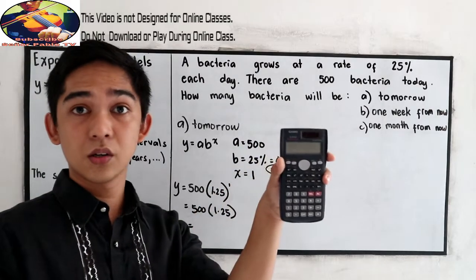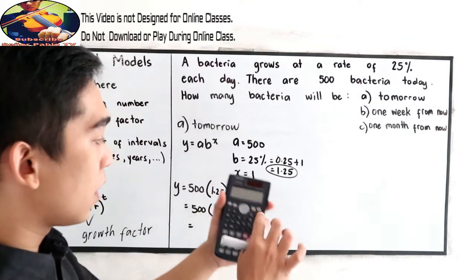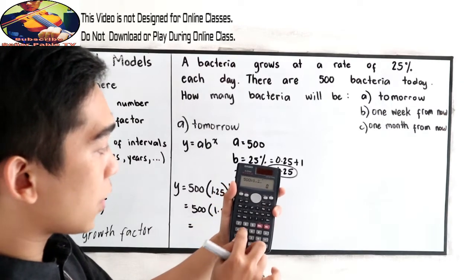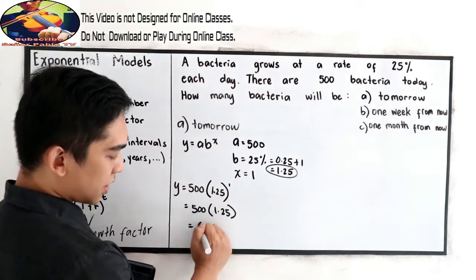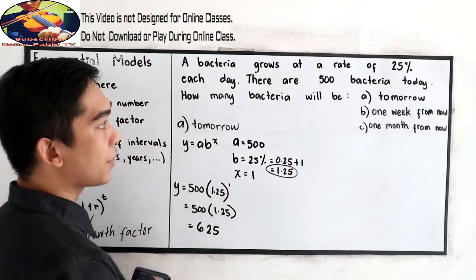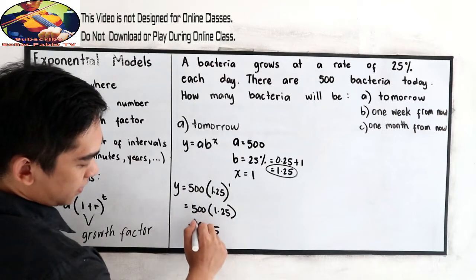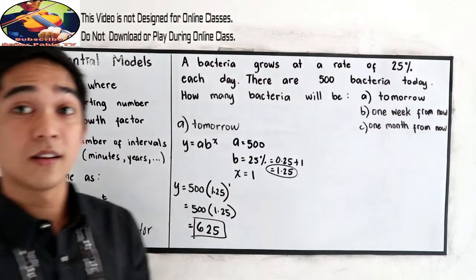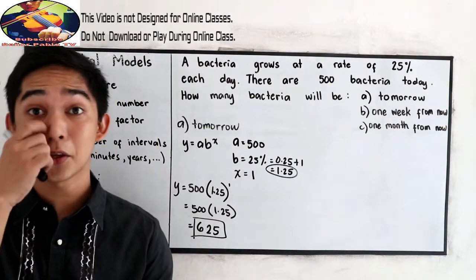Let us use our calculator to solve. 500 times 1.25 raised to 1 equals 1.25, so 500 times 1.25 gives us 625. There are 625 bacteria tomorrow.